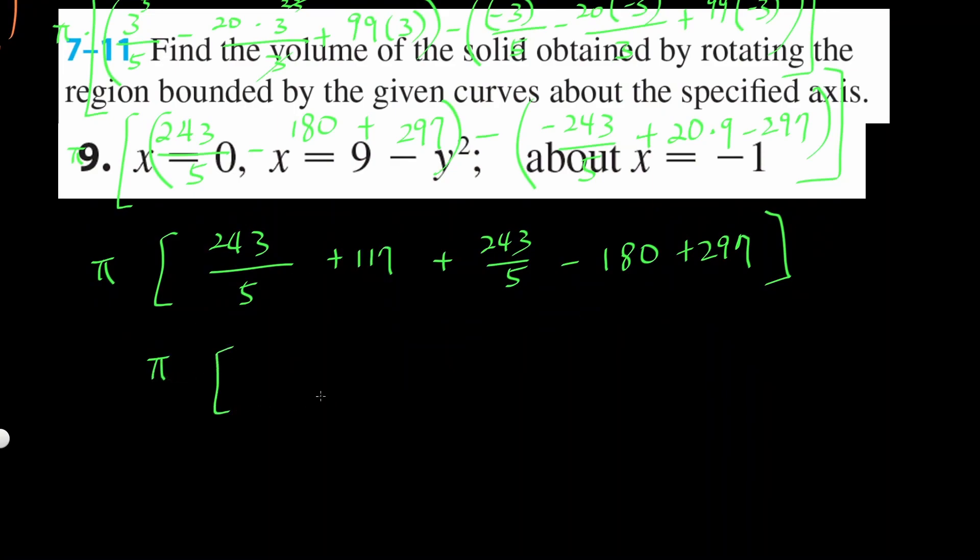We're almost there. So pi times, that's going to be, I'm going to add these two up. Denominator 5, it's going to be 486. And then if you add that, minus that, add that, it's going to be plus 234.